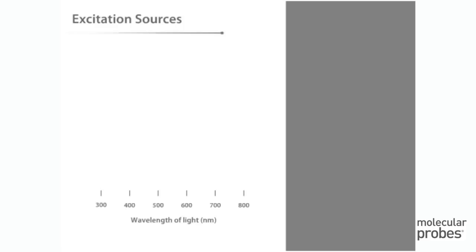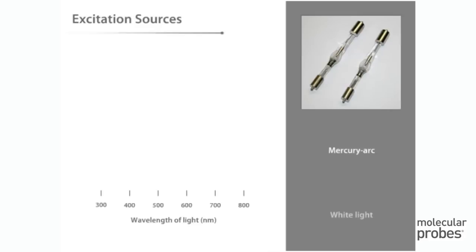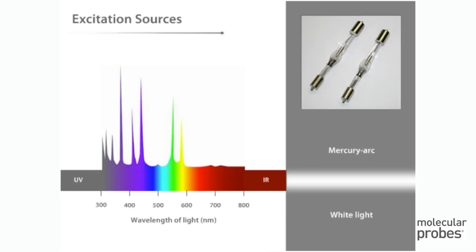The most popular sources used for exciting fluorescent dyes are broadband sources, such as the mercury arc and tungsten halogen lamps. These produce white light that has peaks of varying intensity across the spectrum.